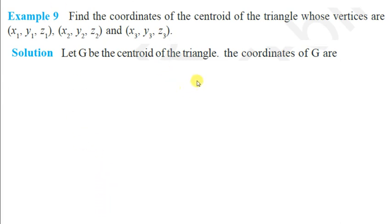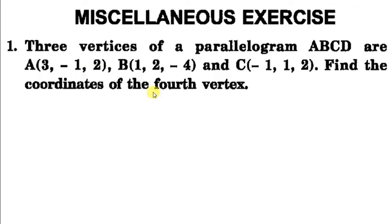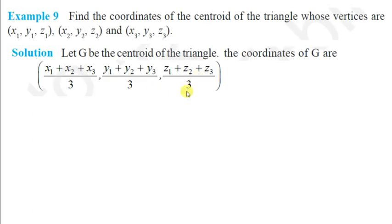The centroid of a triangle is the point of concurrence of medians, given by: x = (x1+x2+x3)/3, y = (y1+y2+y3)/3, z = (z1+z2+z3)/3. Let us now do the next few questions from the miscellaneous exercise.